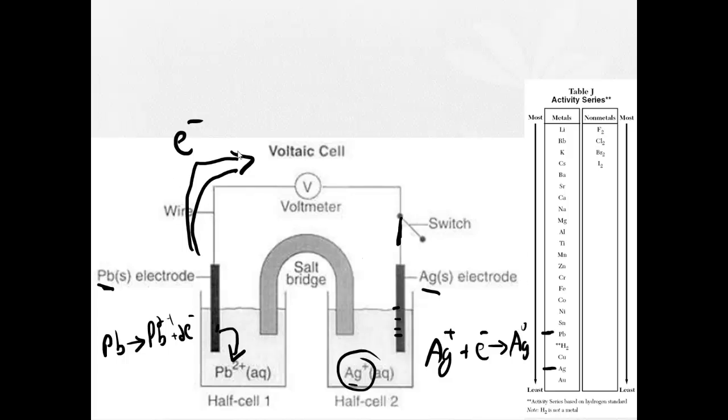So we predicted which way the electrons are going to flow. Now, what's going to be the negative electrode? Well, since the electrons are flowing this way from this electrode, this becomes the negative electrode. This becomes the positive electrode.